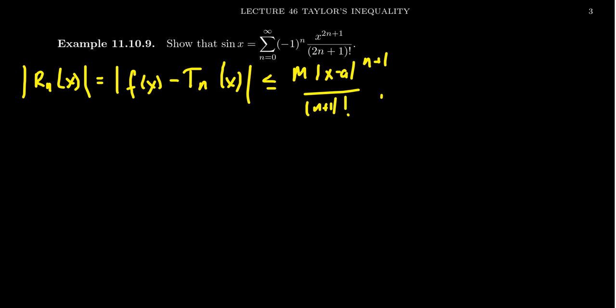Where in this situation, x minus a is less than a fixed number d, and m is greater than or equal to the absolute value of the n plus 1st derivative of the function evaluated at x, where x is no more than d units away from the center of the Taylor series.